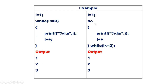Now let us do the same program using do-while loop. i is initialized to 1. Do: print i — the value of i will be printed, that means 1 will be printed. i++ means the value of i is incremented by 1, so i now becomes 2. While i less than or equal to 3 — condition true, so it goes back to the beginning of the loop.